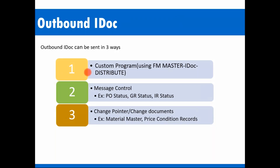The second method is message control. Wherever you have an output type — like PO output type, GR output type, IR output type — for these kinds of message control scenarios, we send the IDoc based on the output type. Today I'm going to explain using the PO status as an example.